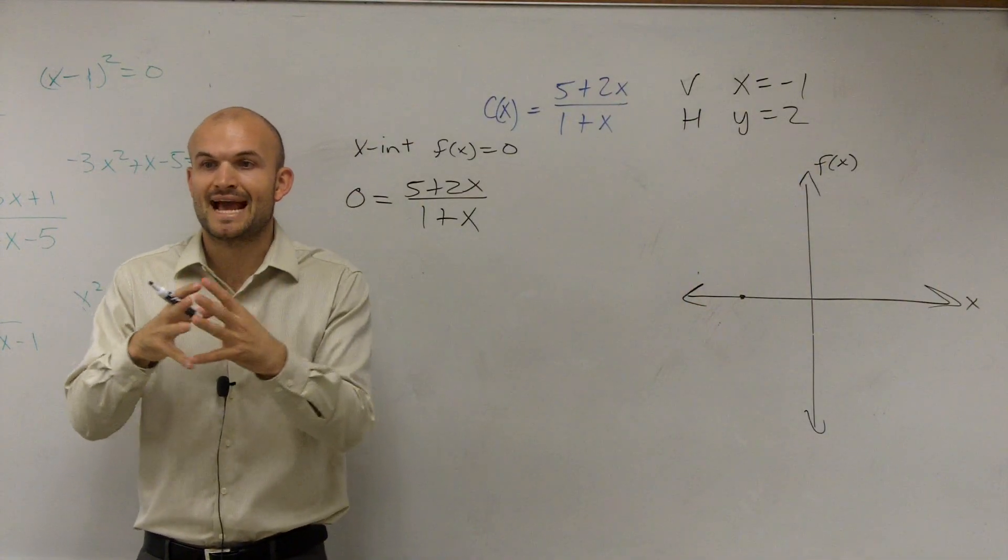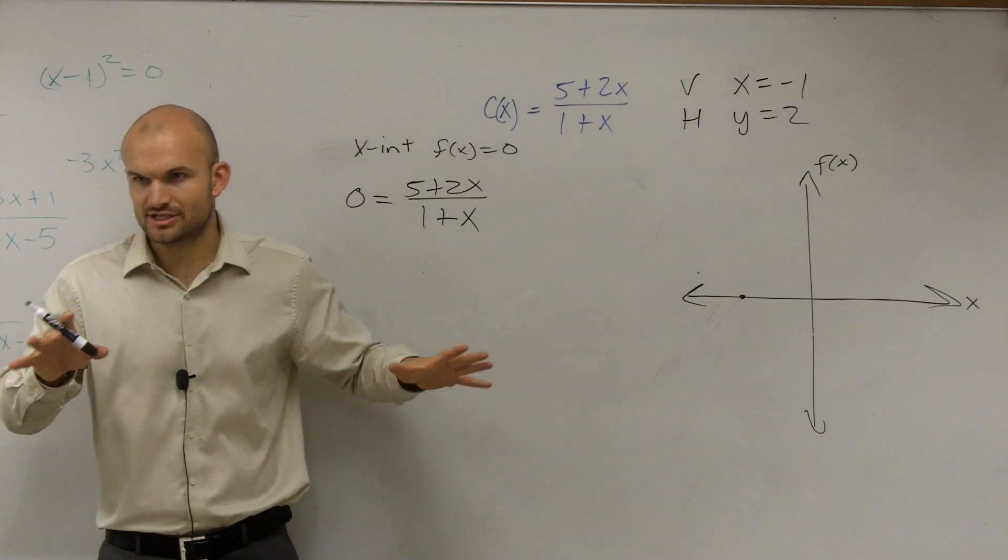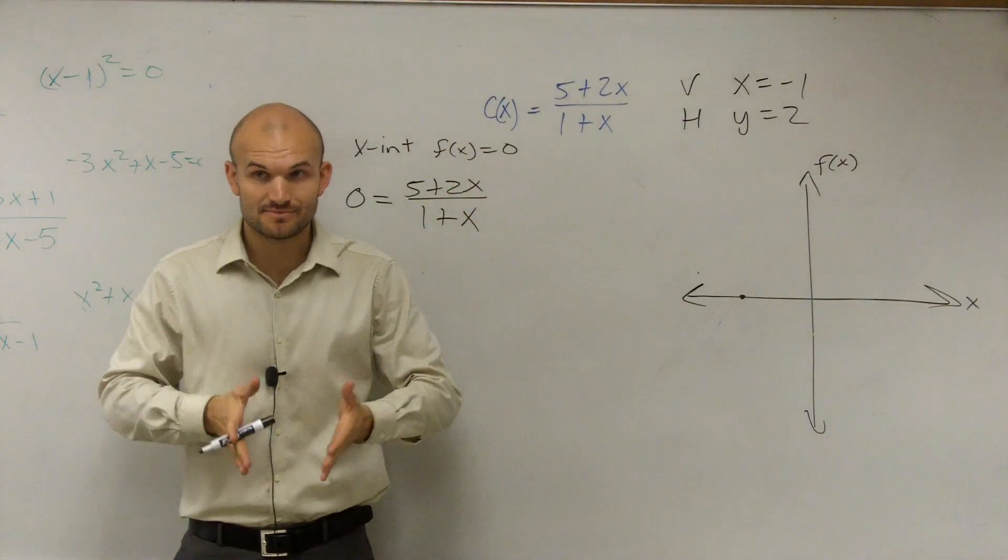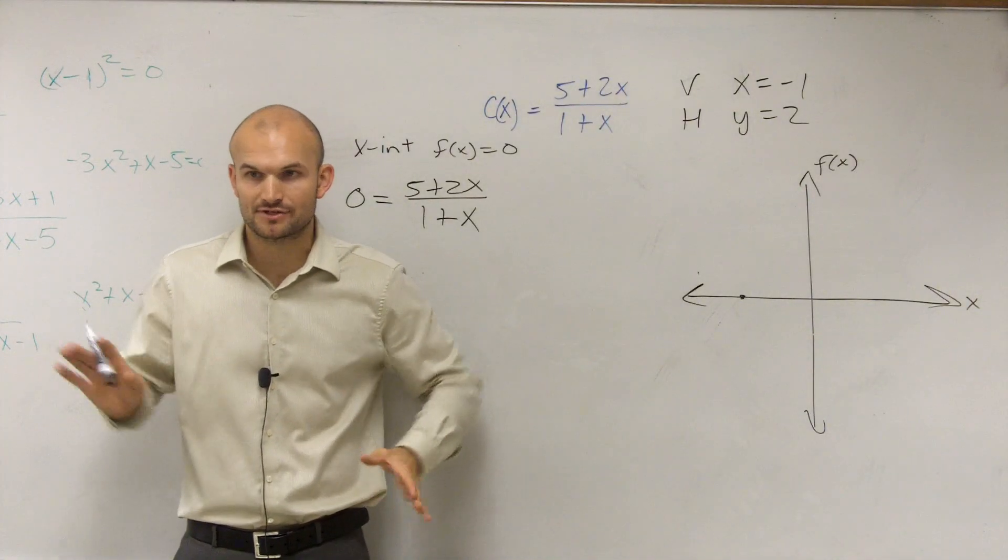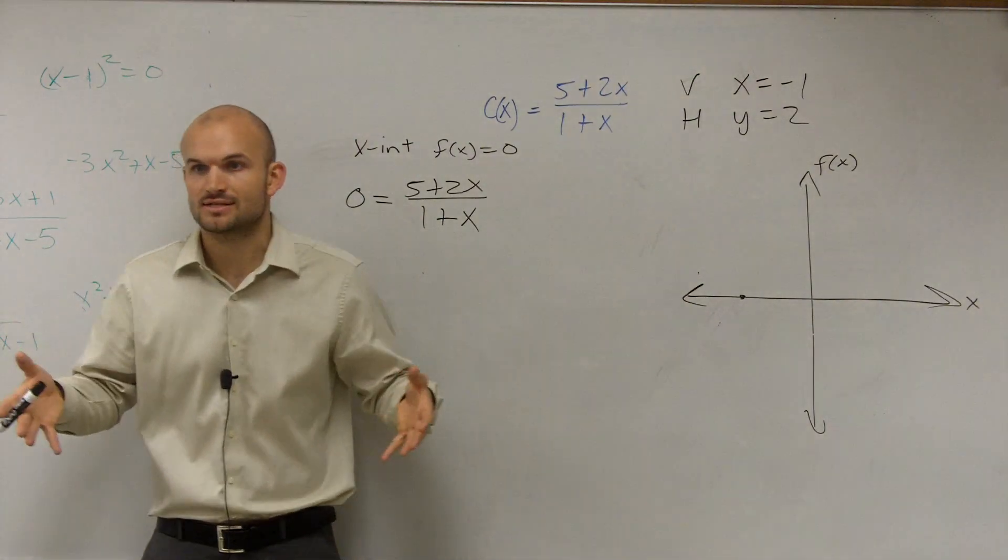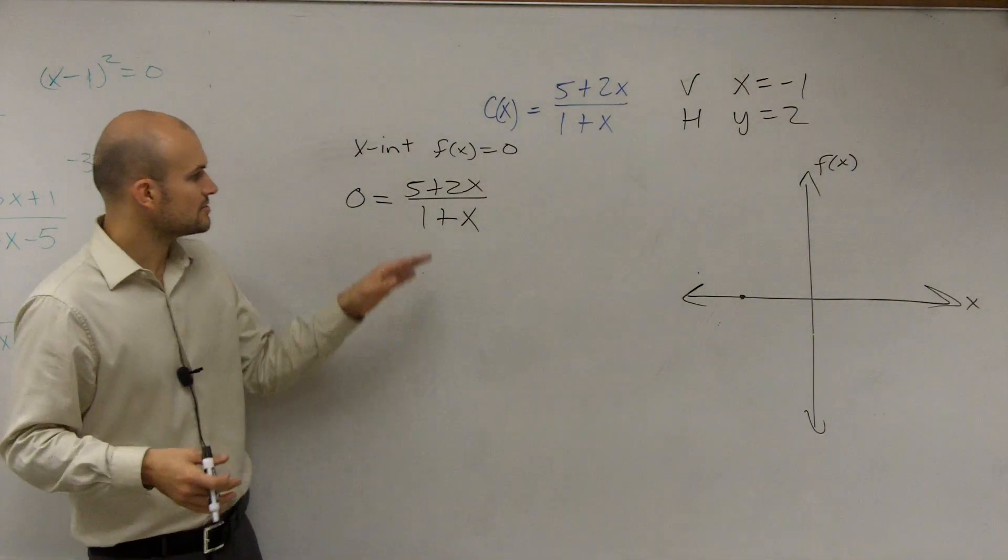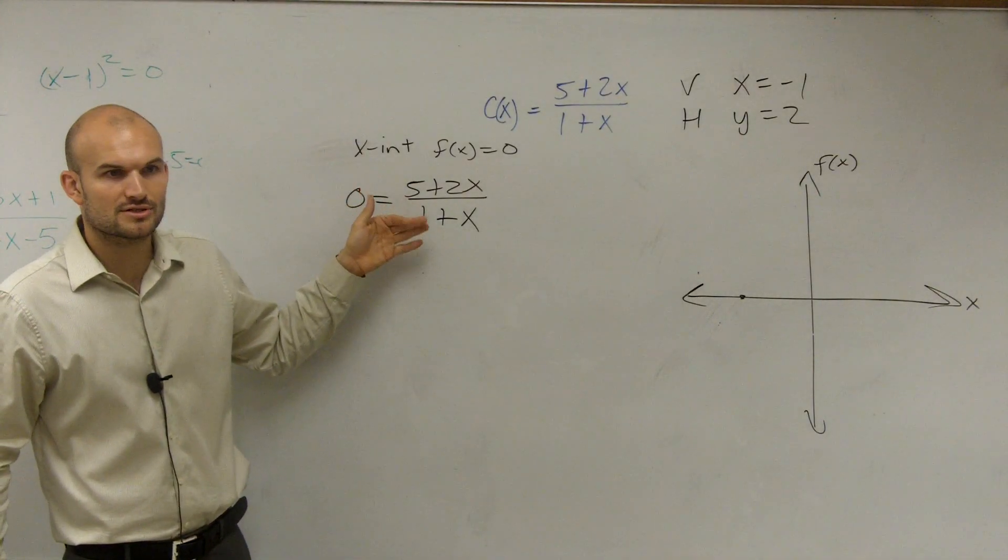That was for finding the vertical asymptotes, which we did last video. Now what we're doing is we're trying to find the x and y-intercepts. So for the vertical asymptote, that's different than an intercept. The asymptote is where your graph is going to approach vertically. But now we're just finding the intercepts, where it crosses the x-intercepts. So now I've got to solve for zero. How do you solve a rational function like this?